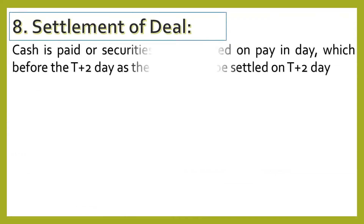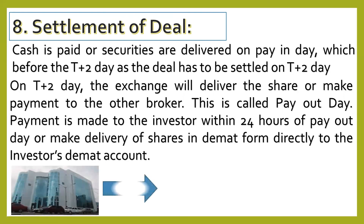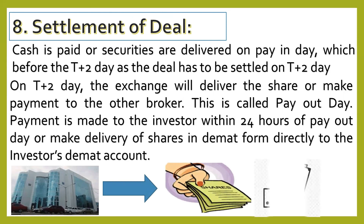After pay-in day comes the settlement of the deal, where cash is paid and securities are delivered on pay-in day. The stock exchange now has the cash and securities. On T+today (pay-out day), the stock exchange will deliver the shares or make payment to the other broker. The shares will then be transferred directly into the investor's DMAT account, and any payment received from selling shares will be transferred from the broker to the investor. The period when the stock exchange delivers payment or shares to the other broker is known as pay-out day.